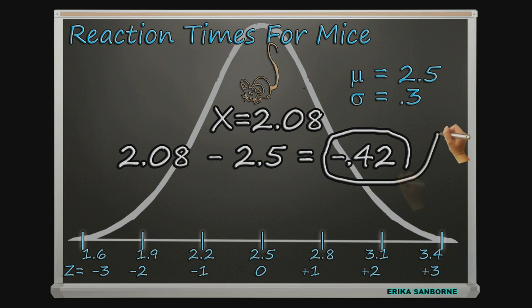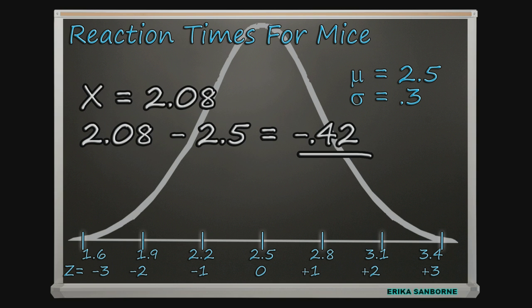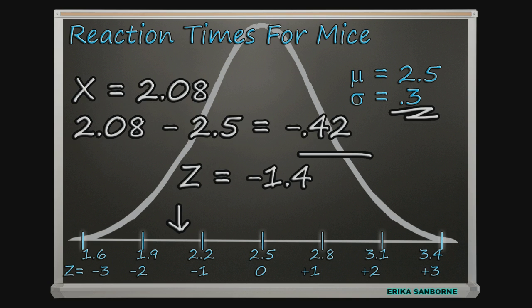Now, how many standard deviations is Seymour to the left of the mean? He's more than one standard deviation because that would be 2.2, but he's not two standard deviations over because that would be 1.9. It's pretty easy to figure out exactly how many standard deviations this score is from the mean. Negative 0.42 divided by 0.3 equals negative 1.4.